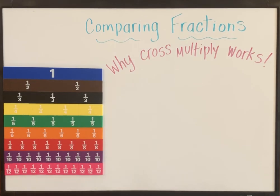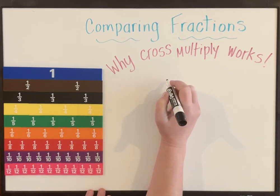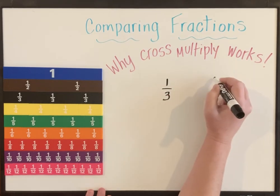First of all, let's start off with finding an example of comparing fractions using cross multiplying. I'm going to write down two fractions, one-third and two-fourths.